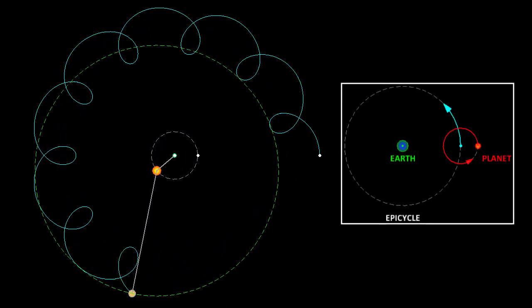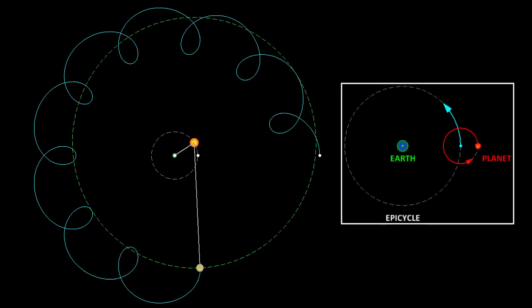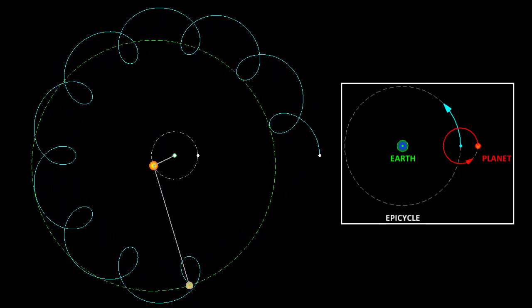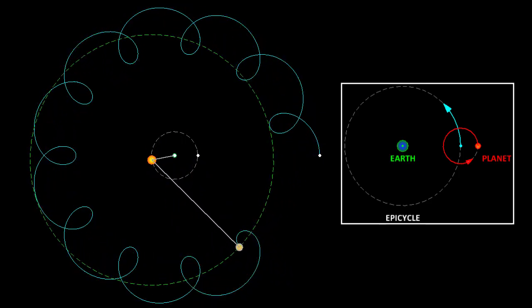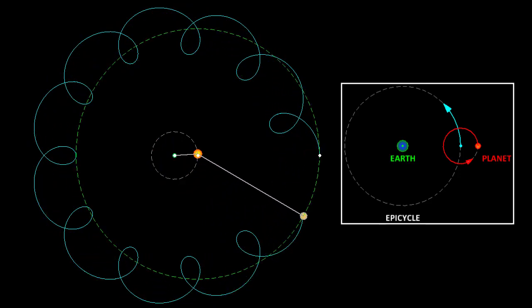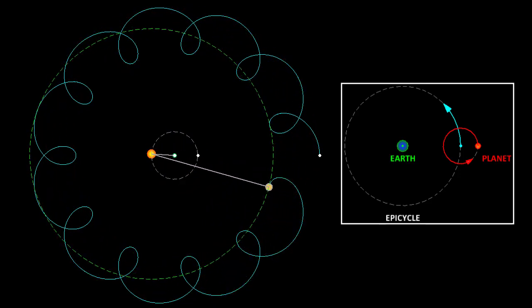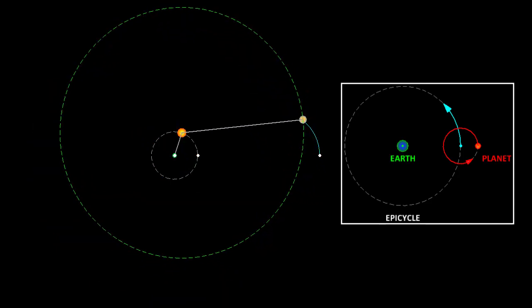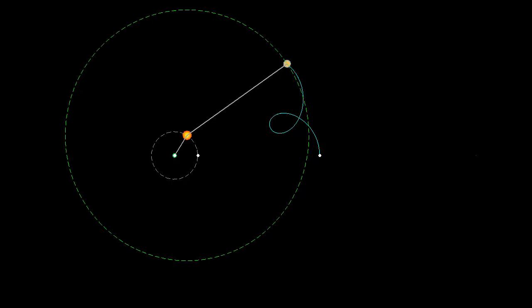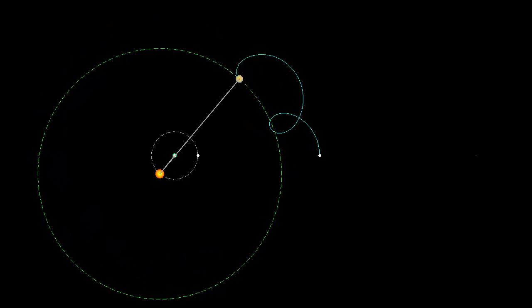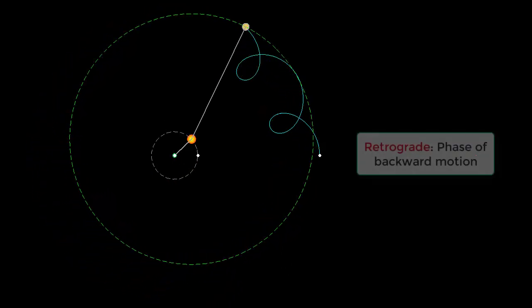So they said, look, the planets are not directly going around the earth, but they are going round and round in their own place. And the point about which they move is orbiting the earth. So with help of these so-called epicycles, they could explain and simulate this motion. In case of epicycles, there is a phase of coming back and that is called as the retrograde motion.